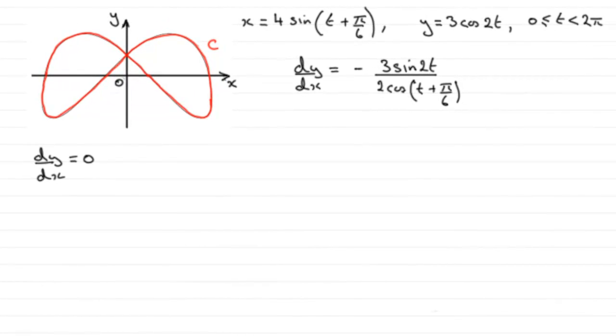Now for this next part, we're told to find the coordinates of the points on this curve C where dy by dx equals zero.